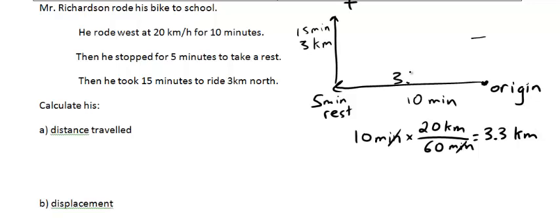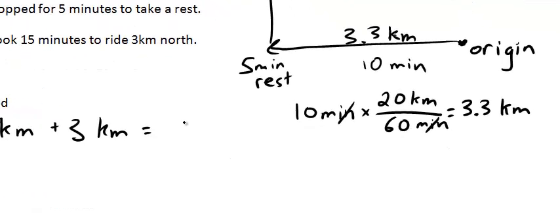So this is 3.3 kilometers. If that is confusing for you, please go and see the video called Unit Conversions. So the distance traveled is pretty simple. The first part was 3.3 kilometers, and then he went 3 kilometers north. So the total distance is 6.3 kilometers.